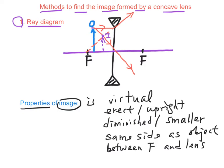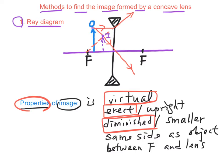The image is at a position between the focus and the lens. Among these properties, virtual image, erect image, and diminished image are also called the nature of the image.